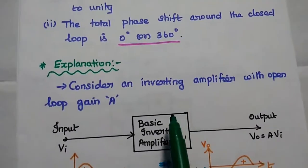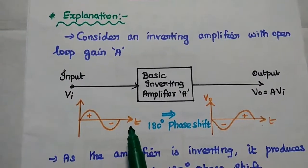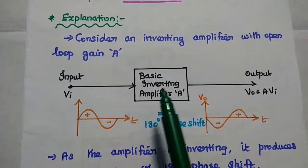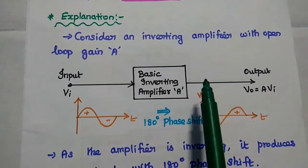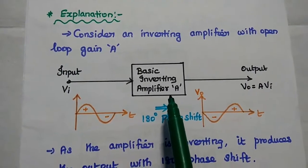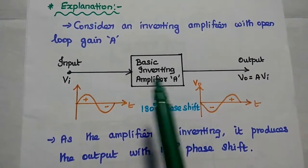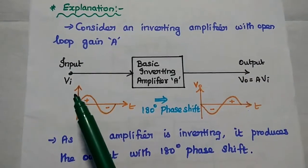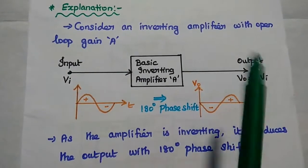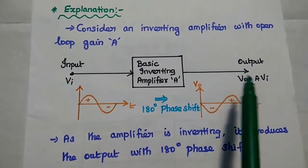In this video, we are going to prove these two conditions for oscillator circuits. For that, we can consider an inverting amplifier with open loop gain A. This is the basic inverting amplifier circuit, in which we give the input signal Vi and we get the output signal as A times Vi.